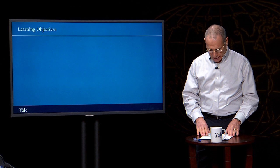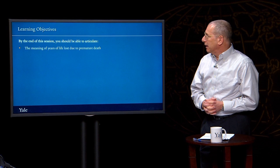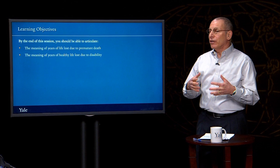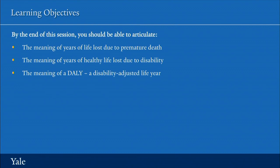By the time this session ends, you should be able to articulate the meaning of years of life lost due to premature death, the meaning of years of healthy life lost due to disability, the meaning of a DALY — or a disability-adjusted life year — and the value of a health gap measure like a DALY for trying to get a better understanding of the real health status of a community, a country, or even the globe.